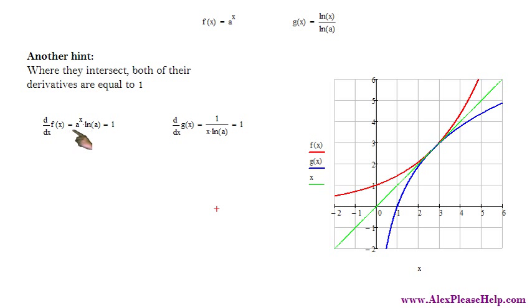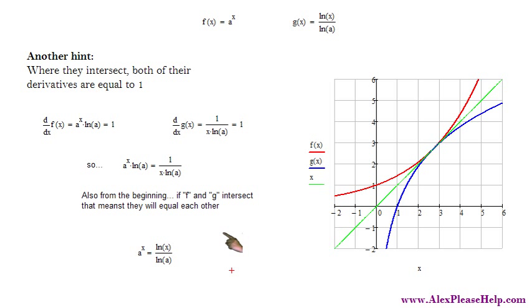The derivative of f with respect to x is a to the x times the natural logarithm of a. It has to be the natural logarithm of a. And that equals 1. The derivative of g with respect to x is 1 divided by the product of x and the natural logarithm of a. And that equals 1 as well. Since they both equal 1, that means that a to the x times the natural logarithm of a equals 1 over x times the natural logarithm of a. And remember from the beginning, f and g intersect, which means they are equal to each other. a to the x equals the natural log of x divided by the natural log of a. And you can see why I chose natural log for the change of base function, because the derivatives pop out a natural log, which makes the solving a little easier.